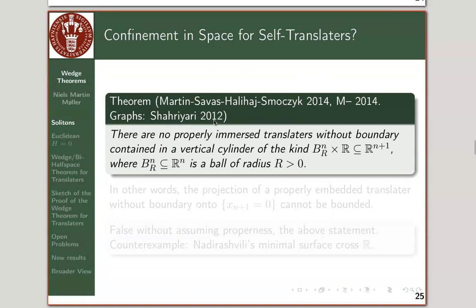A meta-theorem worked on by several authors: the version with no assumptions on boundedness or graphicality is from my paper from 2014. Other versions with more assumptions were given by Shahriyari for graphs, and Martín-Savas-Halilaj-Smoczyk with boundedness from below. The conclusion is: there are no properly immersed translators without boundary contained in a vertical cylinder — a cylinder whose long direction is the translation direction.